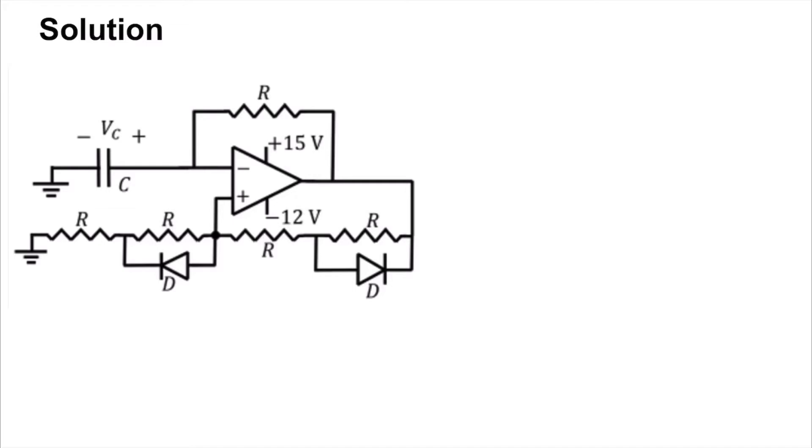Assume that the output is at 15 volts. What would happen? Well, then this diode would be off and this diode would be on based on the direction of current flow and the voltage polarity across the resistors.